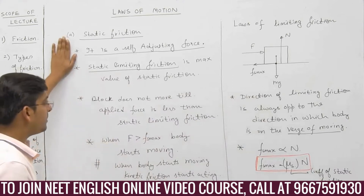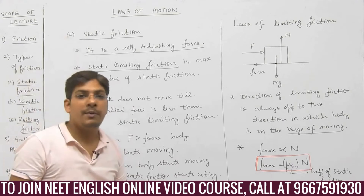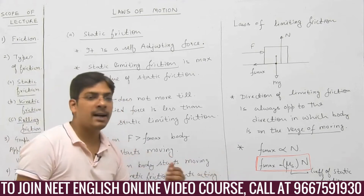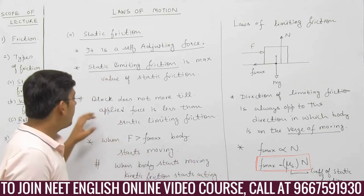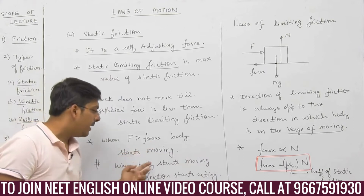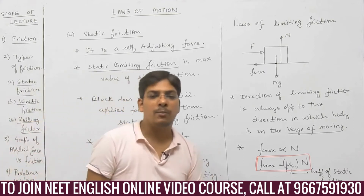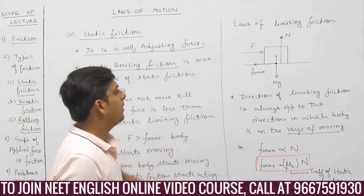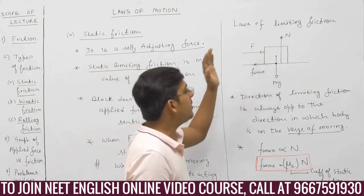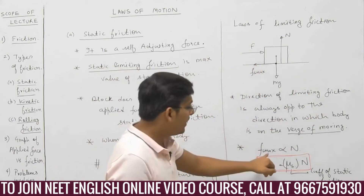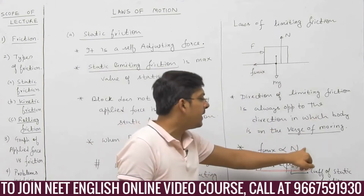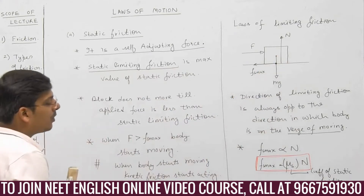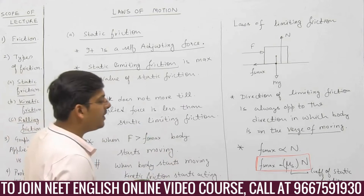Friction is a self-adjusting force. It adjusts itself equal to the value of applied force, till the applied force is less than the maximum value of static friction, that is static limiting friction. When the applied force exceeds the value of static limiting friction, the block starts moving. When the block starts moving, kinetic friction will start acting. The direction of static limiting friction is opposite to the direction in which the block was on the verge of moving, and its magnitude is directly proportional to the normal reaction. Let us deal with some examples based on Fs max = mu s × N.